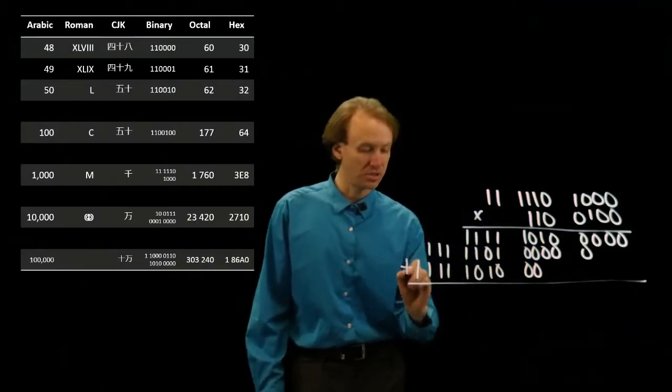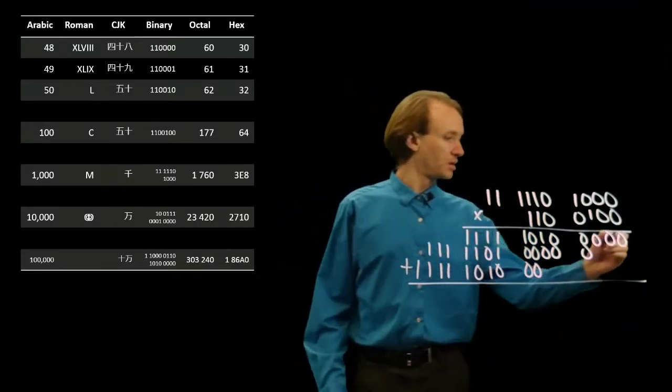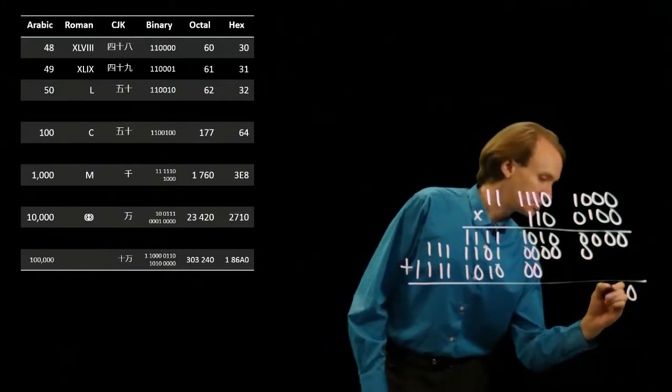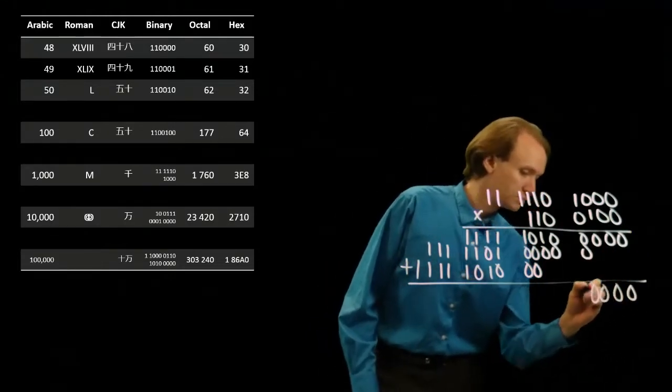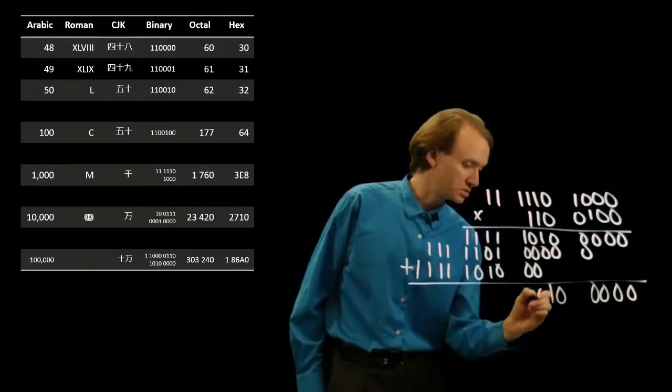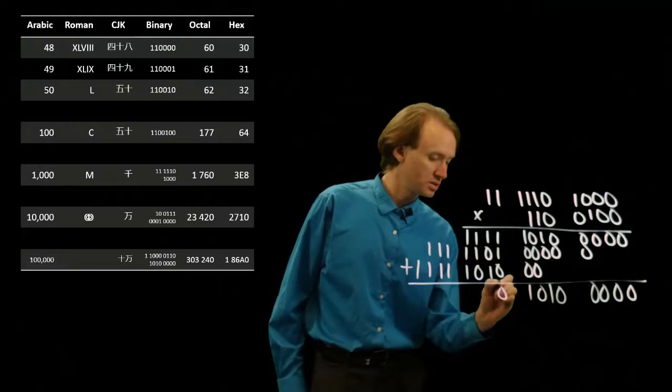And now I just need to add up these three binary numbers. So, I've got a whole lot of 0's over here, nothing else to do. Now I've got 1 plus 0 is 1, 0, 1, 10.